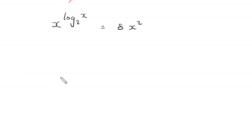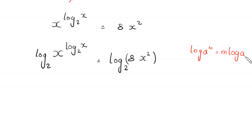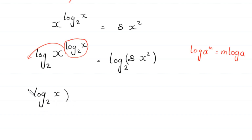Now we take log base 2 of both sides: log base 2 of x to the power log base 2 of x is equal to log base 2 of 8x squared. By using the log property — log of a to the power m equals m times log of a — the power log base 2 of x comes down, giving us log base 2 of x times log base 2 of x.